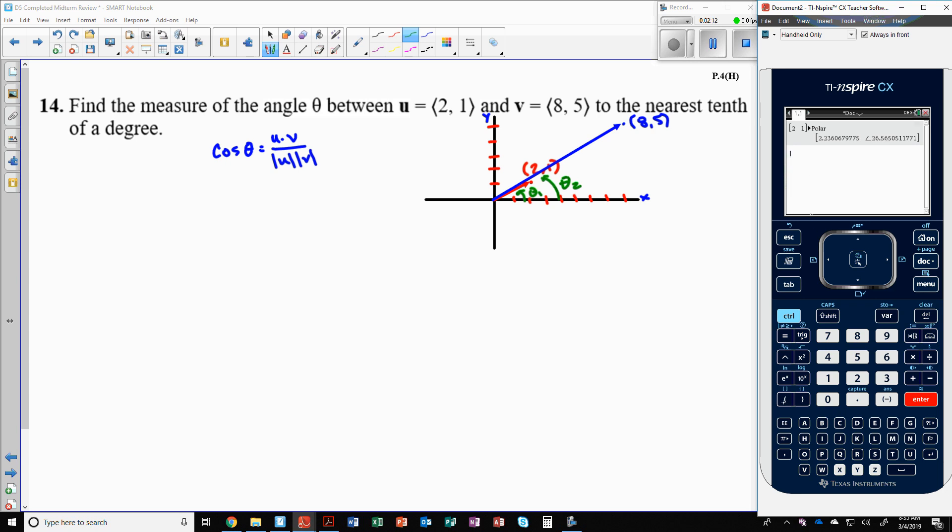And I'm going to do the same thing with my second vector, which was 8, 5, and I want to convert this to polar, so I go menu 7, C, 4, menu, matrix and vectors, C stands for vectors, and then 4, convert to polar, and now I have this angle.